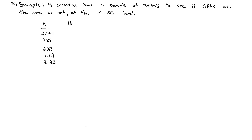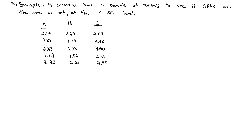Sorority B had GPAs of 2.63, 1.77, 3.25, 1.86, and 2.21. Sorority C had GPAs of 2.63, 3.78, 4.0, 2.55, and 2.45. Sorority D had GPAs of 3.79, 3.45, 3.08, 2.26, and 3.18.